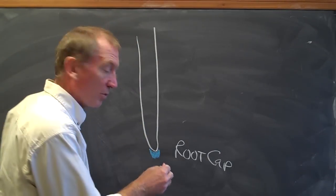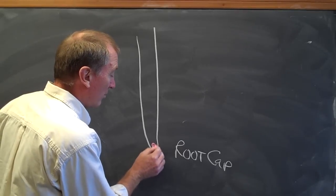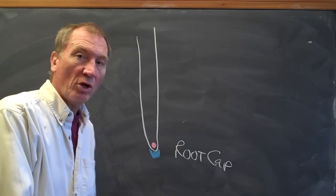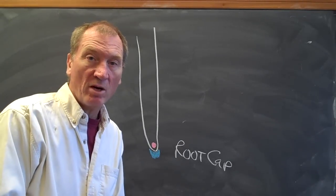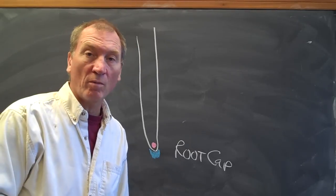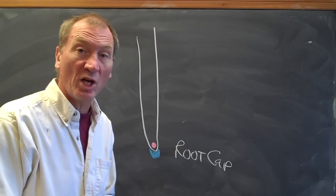Next, right behind the tip of the root, that I'll show in red, is the apical meristem. You've heard of the apical meristem before, that's where new cells are produced.